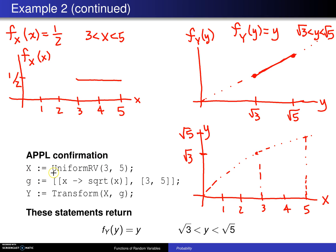Finally, as a computational confirmation: set X equal to a Uniform(3,5) random variable, define the transformation g as x → √x valid from 3 to 5, then call the transform function with parameters X and g. Those values return f sub Y of y for y values between √3 and √5, which is exactly what we derived.